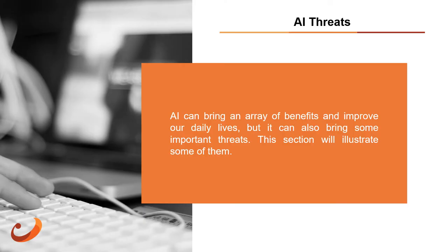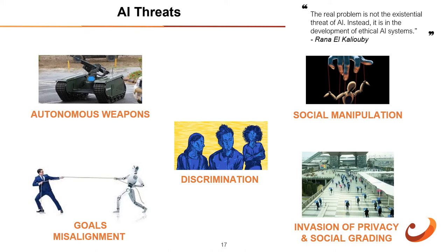As we have seen, AI can bring an array of benefits and improve our daily life, but it can also bring some important threats. AI programmed to do something dangerous — as in the case of autonomous weapons programmed to kill — is one way AI can pose risks. Social manipulation: social media, through its algorithm-powered autonomy, is very effective at targeted marketing. By spreading propaganda to individuals identified through algorithms and personal data, AI can target them and spread whatever information it likes in whatever format they will find most convincing.